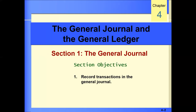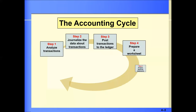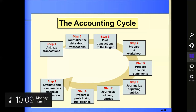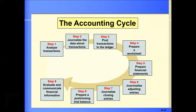Section one's objectives are to record transactions in the general journal and to prepare compound journal entries. This is the accounting cycle — it's in your textbook. Step one is to analyze transactions, which we did in week one. Step two is to journalize the data about those transactions — that's what we're covering today. Step three is to post transactions to the ledger, which we're also covering today.